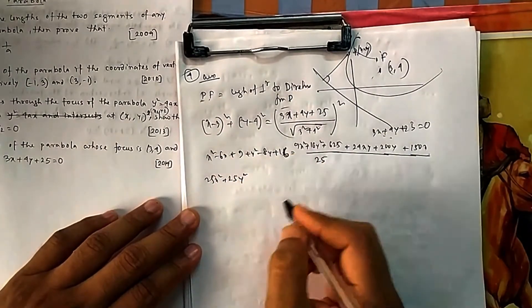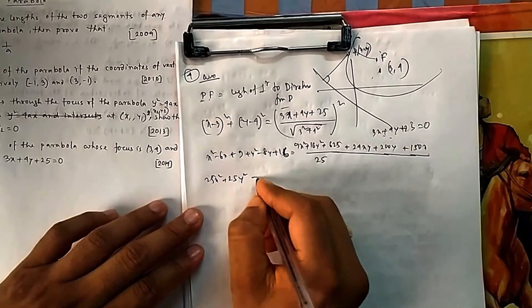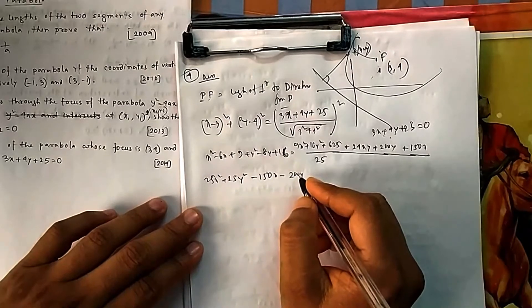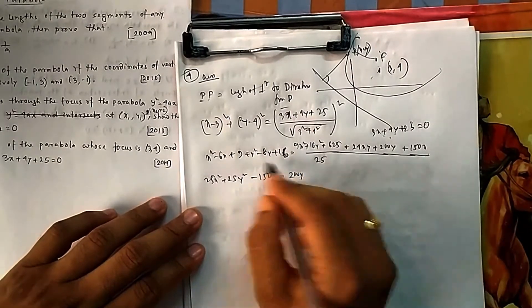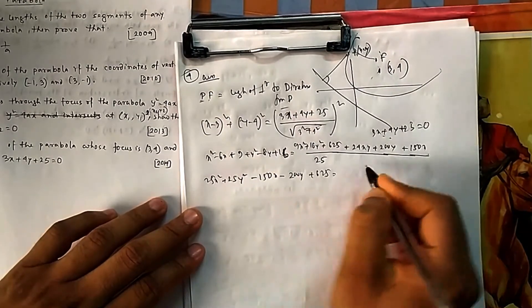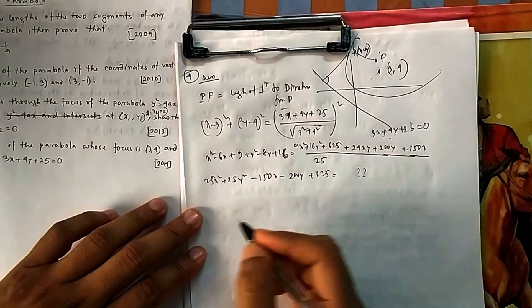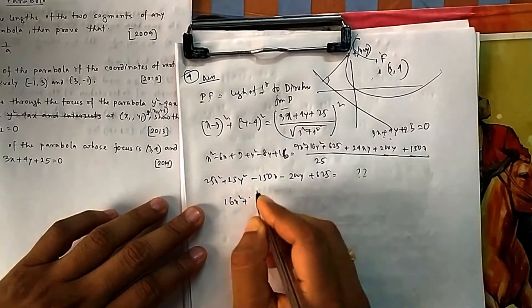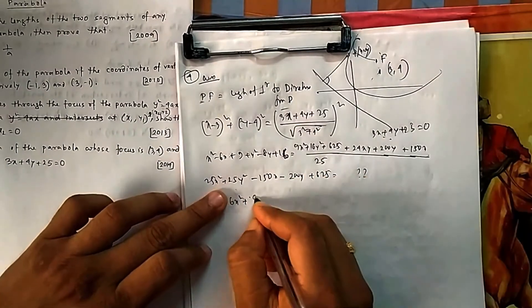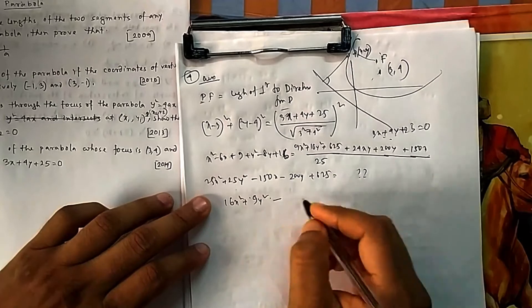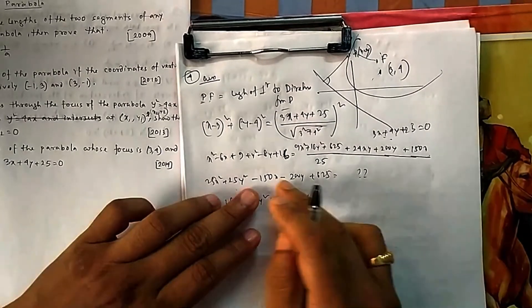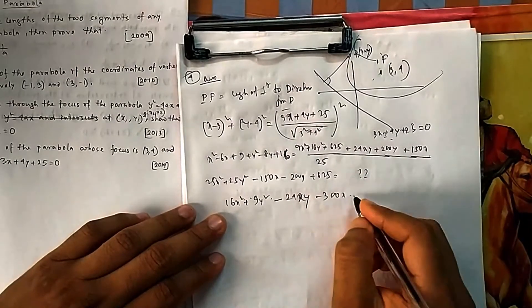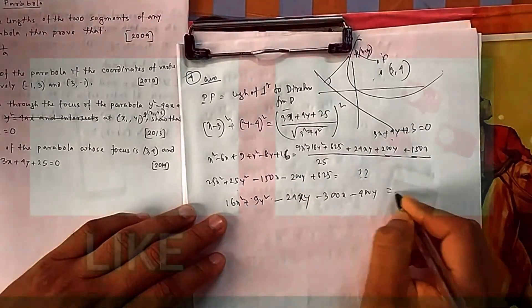So if you now side change, it will be 25x² + 25y² - 150x + 200y - 625. And this is 60, then 150x - 200y, and this is 625. So 625 and 625 will get cancelled. 9x² will become 16x², then 25 - 16 is 9y², then -24xy, then 150 - 150 is -300x, then 200 - 200 is -400y = 0.